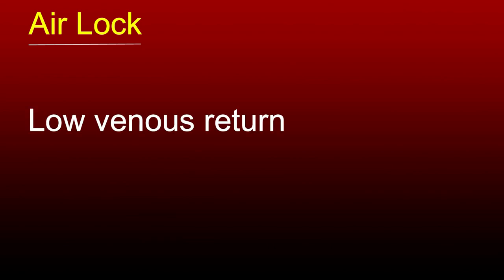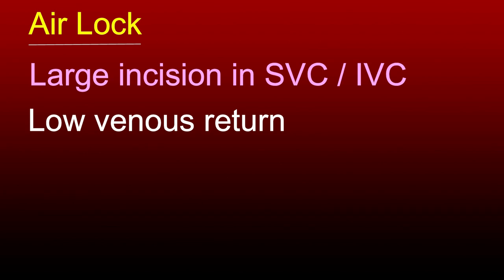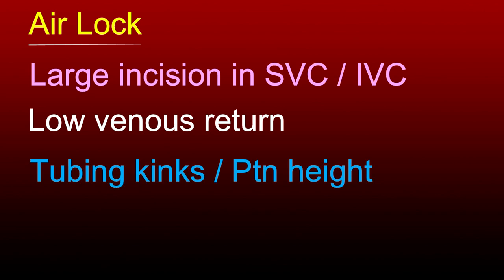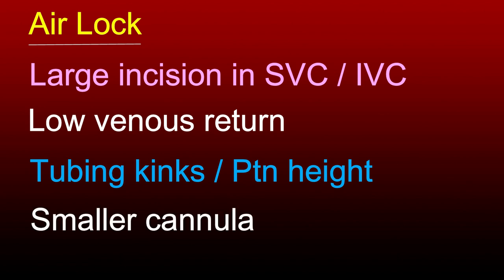Airlock is a phenomenon that can cause venous obstruction and distension of the heart. One must ensure that blood from the venous cannula is flowing smoothly into the venous reservoir without airlock. If there is an airlock, there is distension of the heart and low venous return. This is commonly seen when the SVC or IVC incision is too large for the cannula size, when snugging is inadequate around the cannula, when there is a kink in the tubing, when the patient height is insufficient from the reservoir level, or when a smaller cannula is used in a larger patient. The tip of the venous cannula is the rate-limiting step for venous drainage.